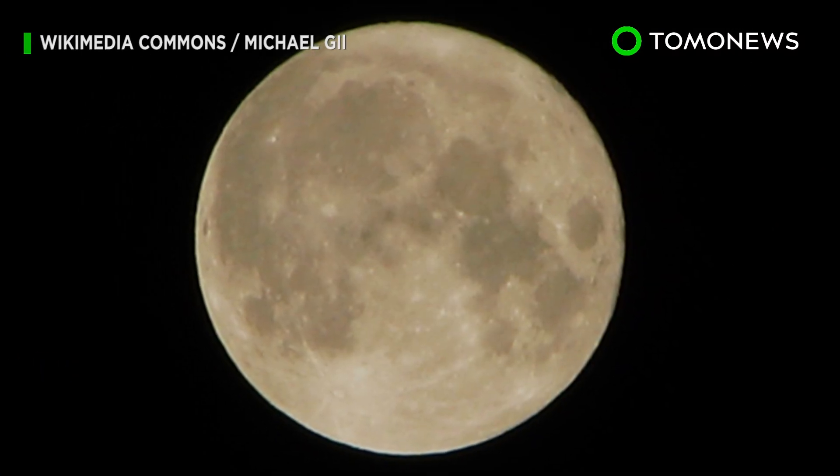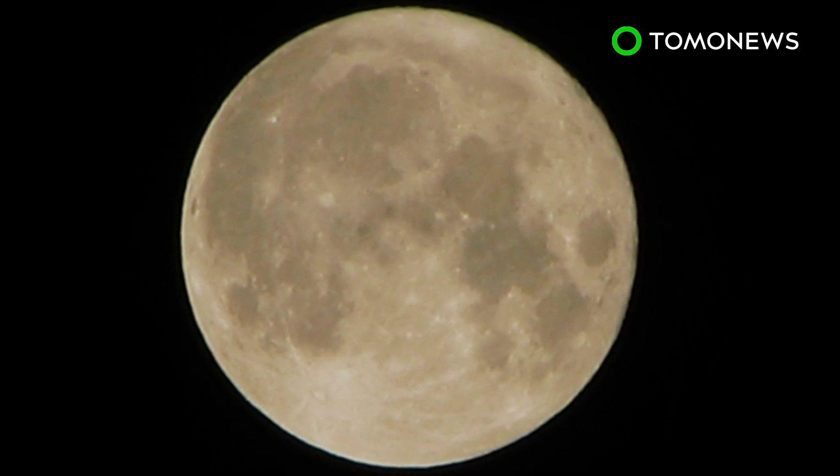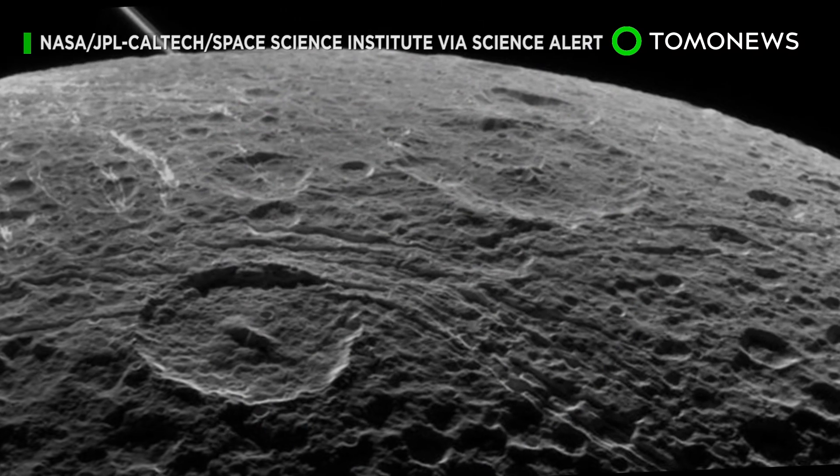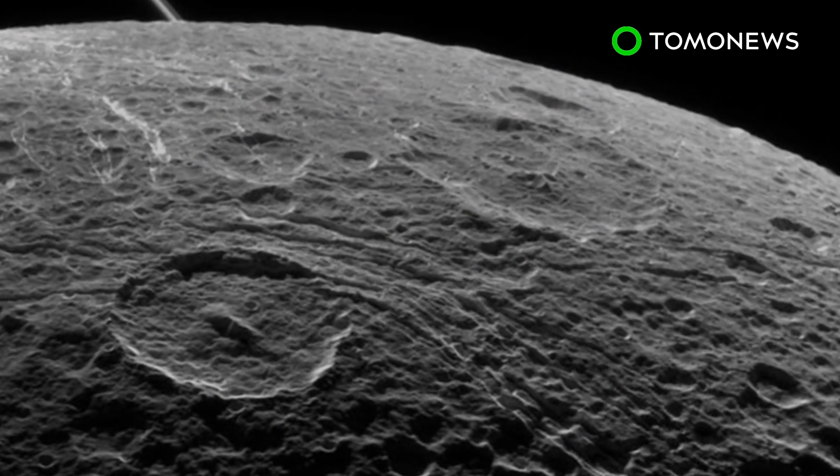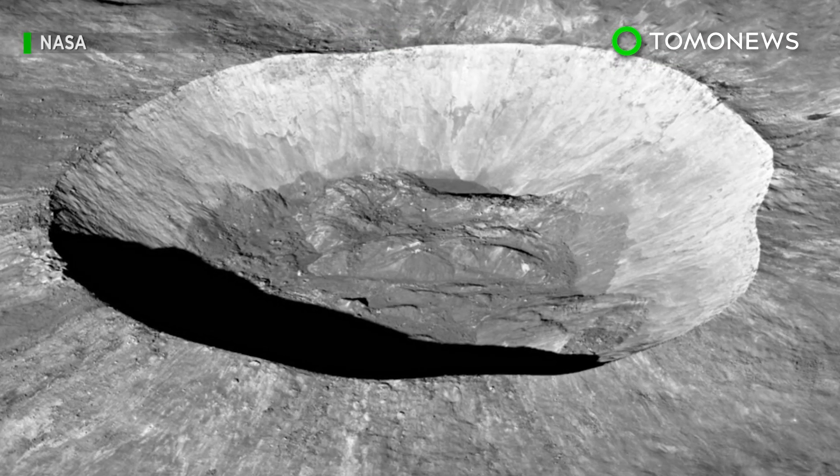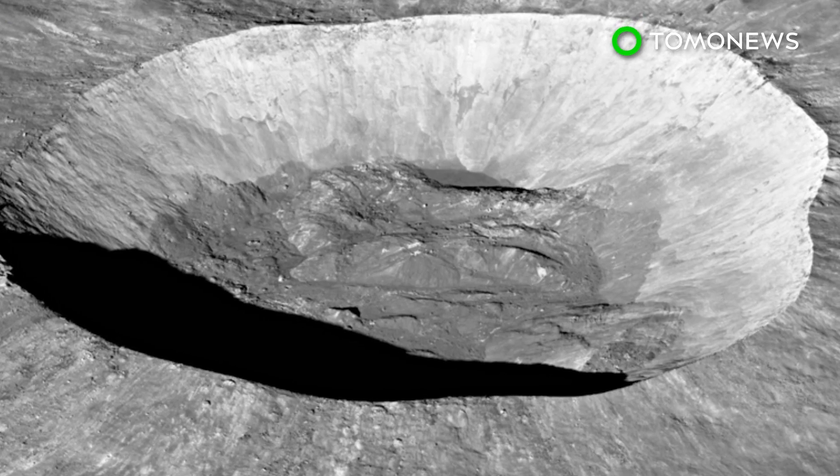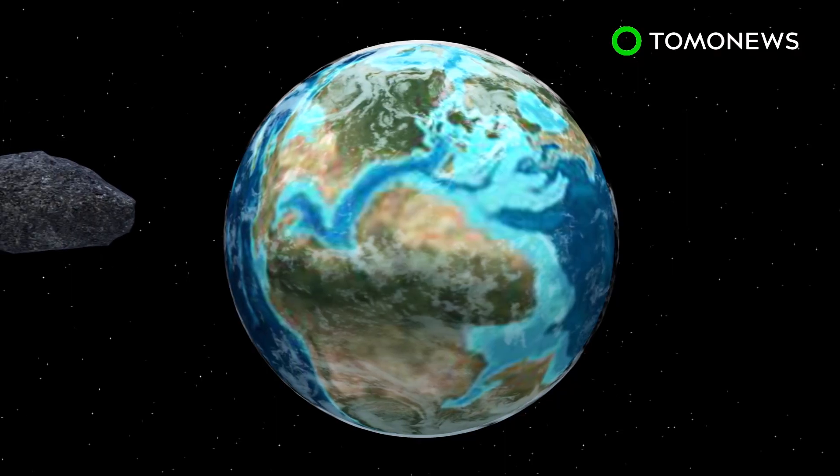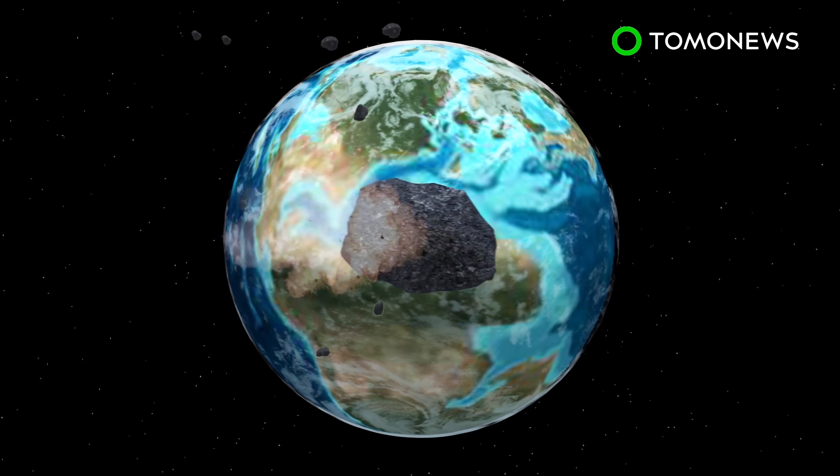Researchers in Israel have revived a decades-old theory that the Moon was created by a series of collisions in space. Many scientists believe the Moon was created when a Mars-sized planet crashed into Earth billions of years ago. However, the Israeli researchers say simulations show their theory is the correct one. According to some experts, the Moon was created over millions of years by objects in space colliding with Earth.